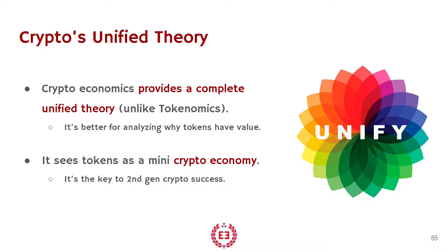Crypto economics' real distinction from tokenomics is that it is a unified theory. This isn't just using monetary or financial analysis — it's using everything in micro theory, macro theory, game theory, and simulation to get the complete picture. The way to really understand the importance of crypto economics is to think of each token as its own mini crypto economy. There has to be a unified picture of everything, because it's all connected and one thing changing can lead to five other things changing. If you can be proactive because you see it happening in the data, you create stability. This makes crypto better than fiat, and this is why crypto will revolutionize the world. This unified theory is key to the second generation of cryptos that I think are beginning to emerge.